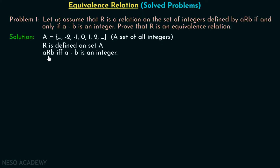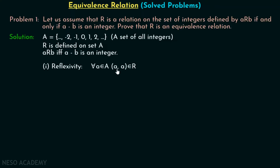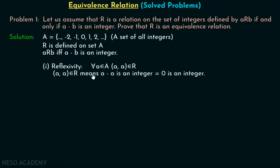First, we will check whether this relation is reflexive or not. We know the definition of reflexivity: for all A belonging to set A, the ordered pair (A, A) must belong to R. For every element A in set A, (A, A) must belong to relation R. Now, what is the meaning of (A, A) belonging to R? It means A minus A must be an integer.